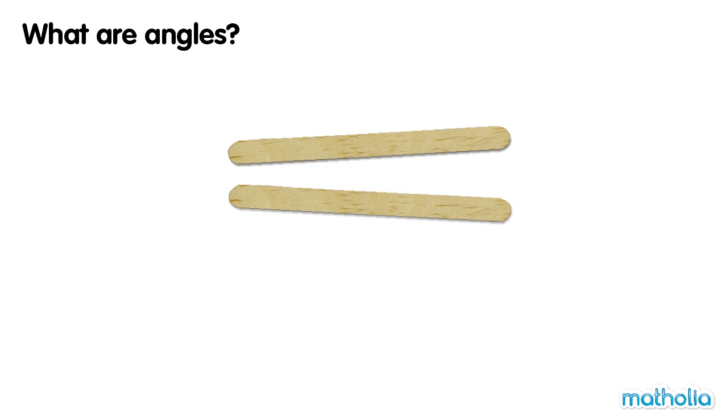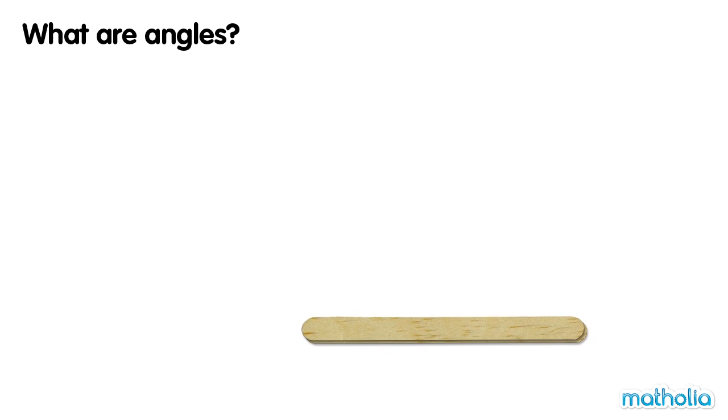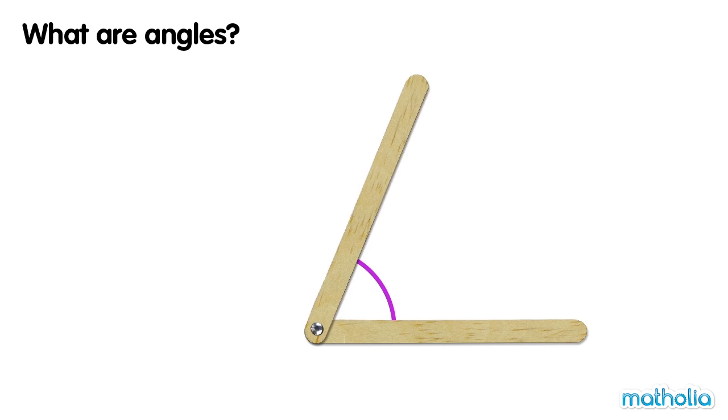We can make angles with two ice cream sticks, joined at a point. By turning one of the sticks, we create an angle.